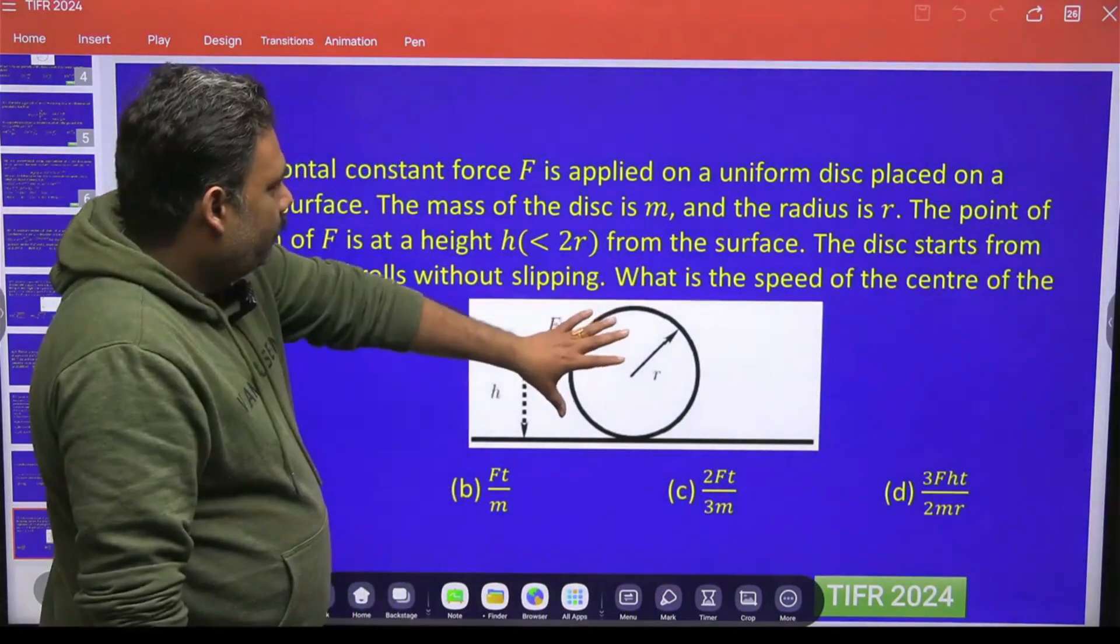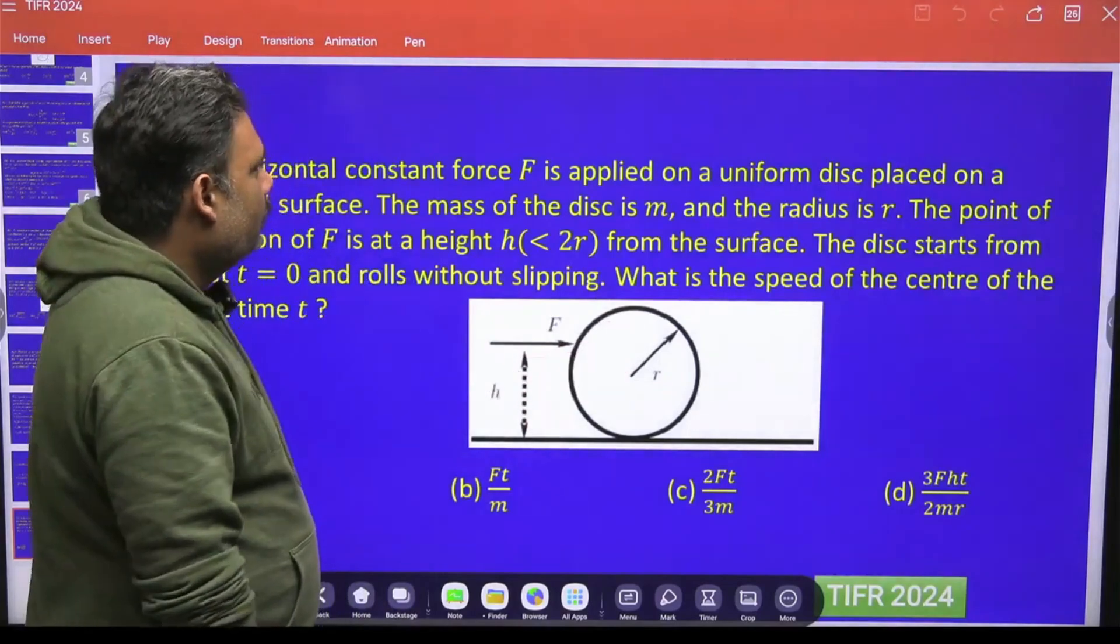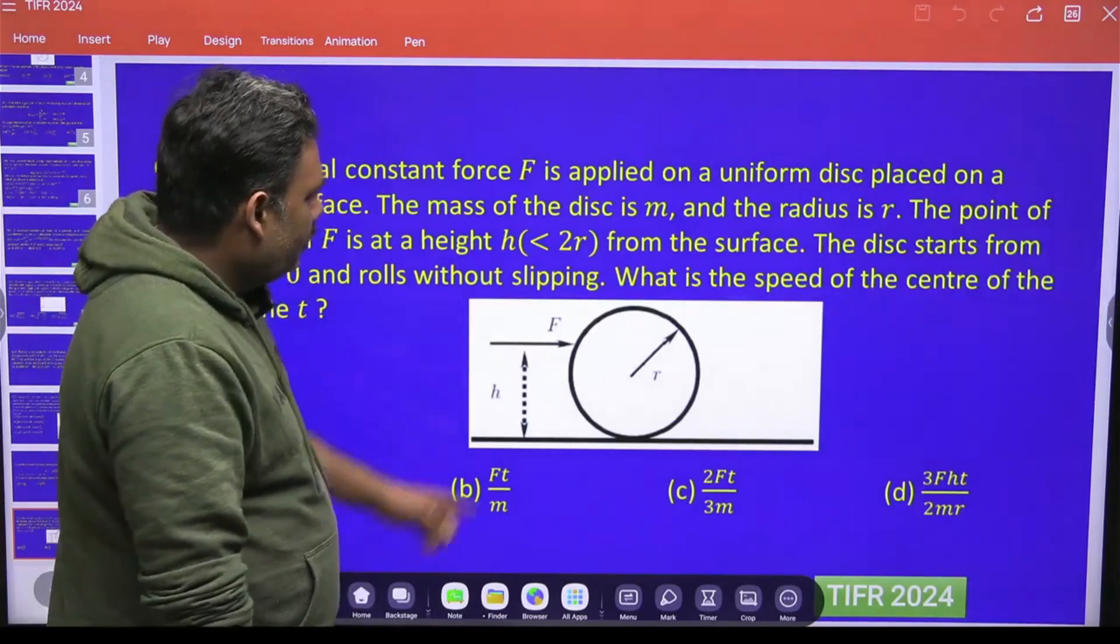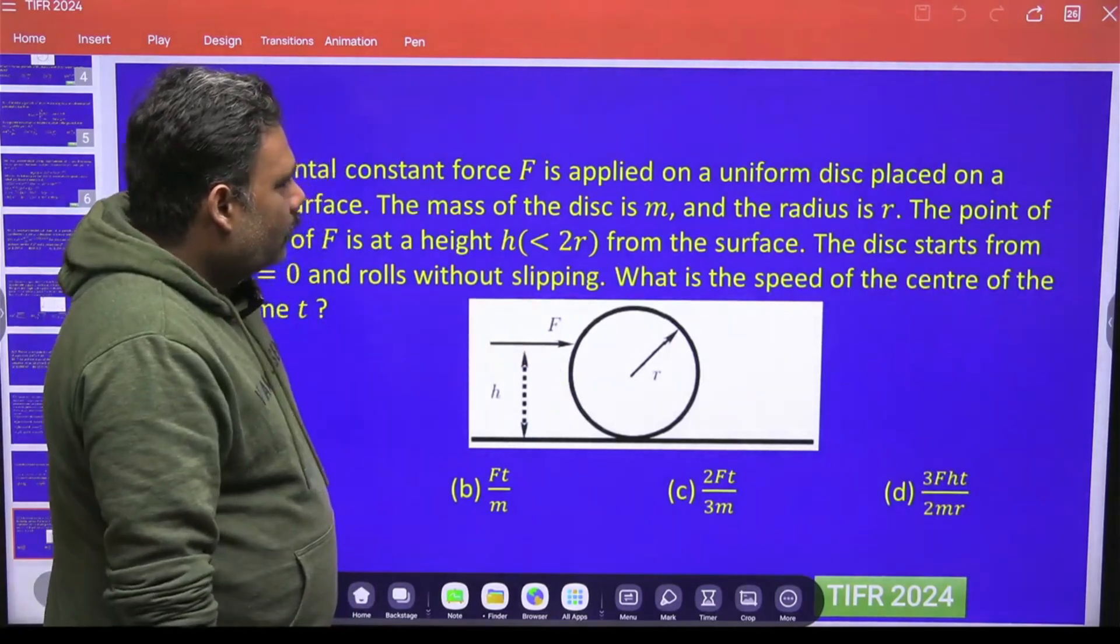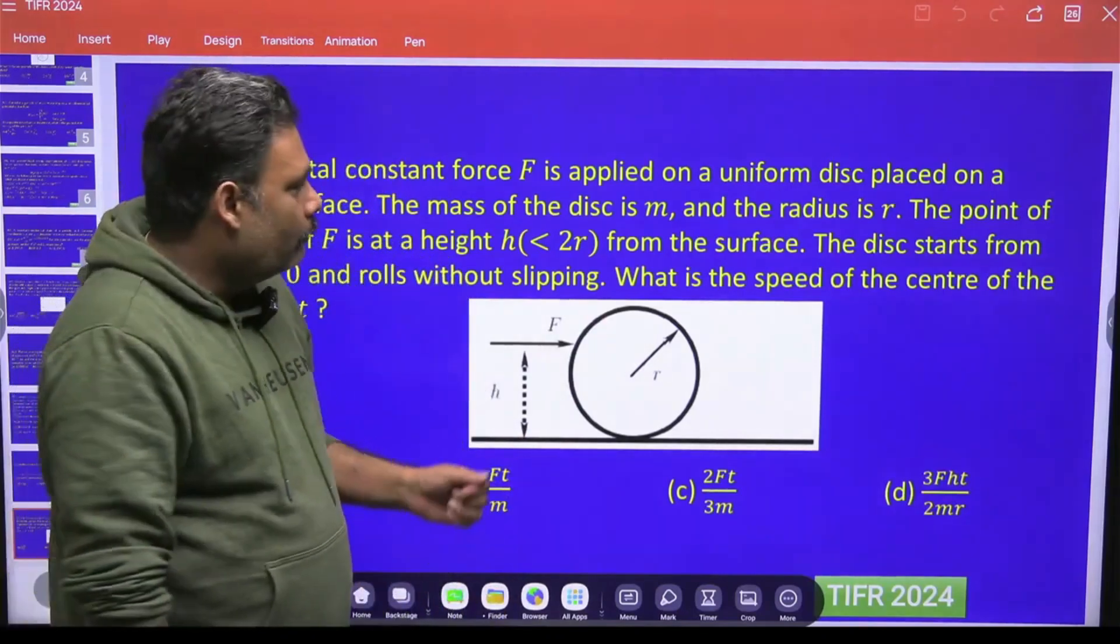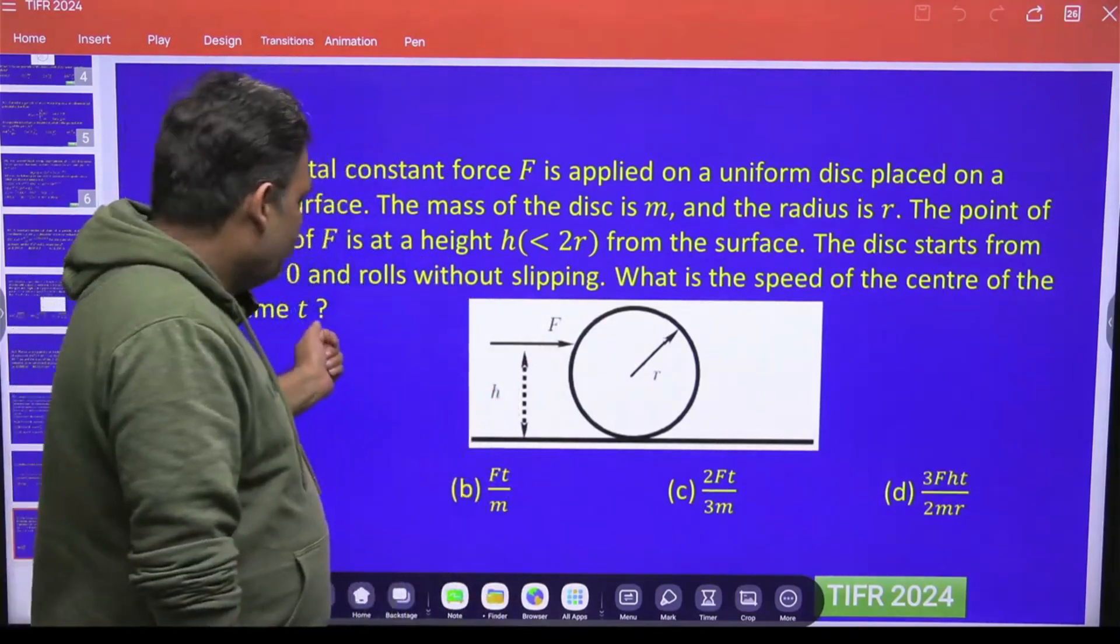So there is a disk, a uniform disk with radius r. A horizontal force is acting on this particular disk. So what will be the speed after time t? We have to calculate the speed after time t.